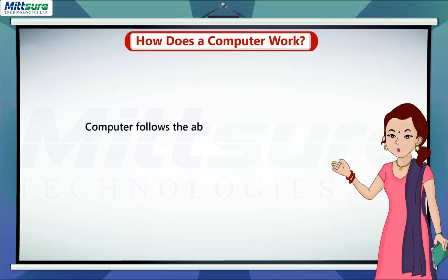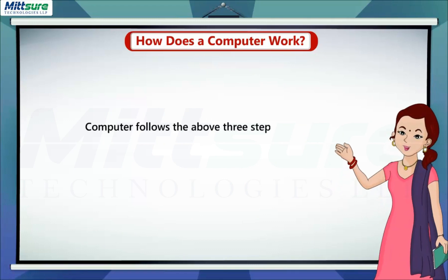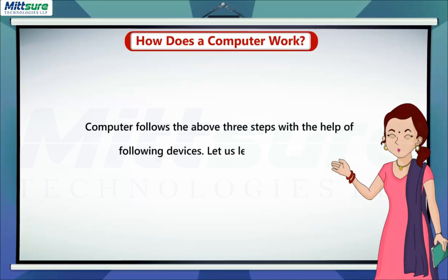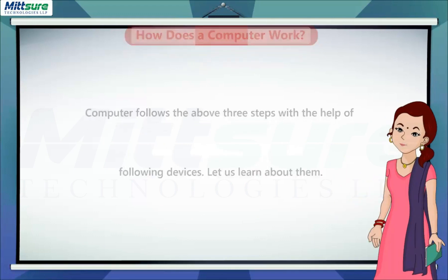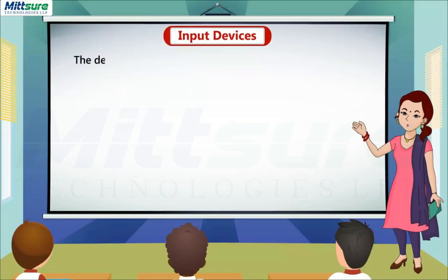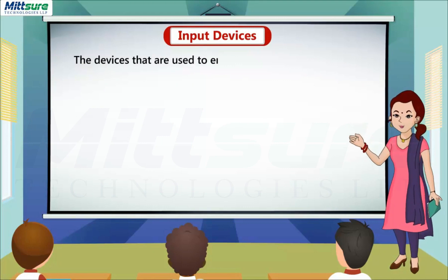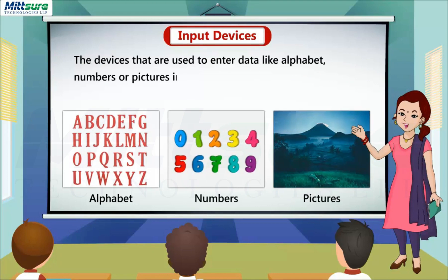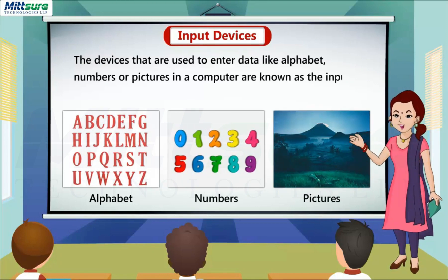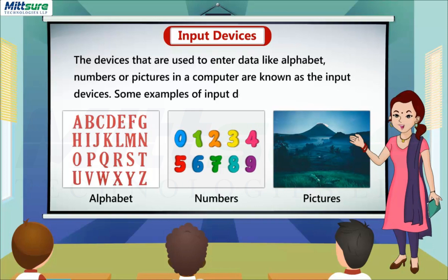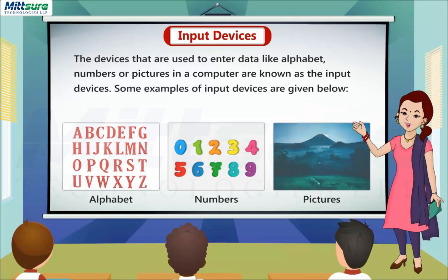A computer follows these three steps with the help of various devices. Input Devices: the devices that are used to enter data like alphabet, numbers, or pictures into a computer are known as input devices. Some examples of input devices are given below.